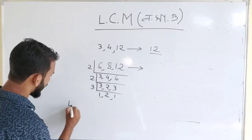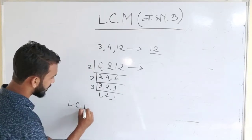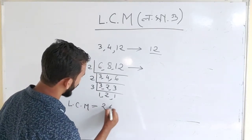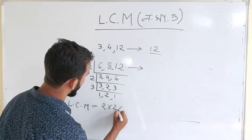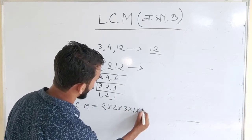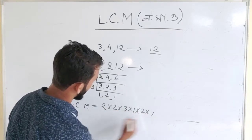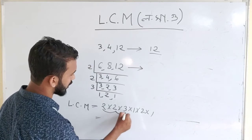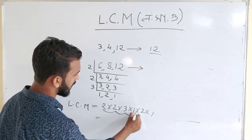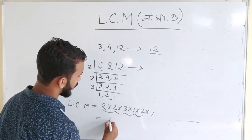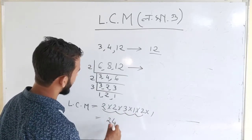So we will get 2 × 3 × 3. LCM — what is it? LCM: two into two, three into one into two into one. That means two to four, four to twelve — twelve, one to twelve, twelve to twenty-four.